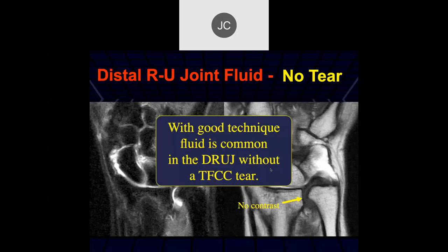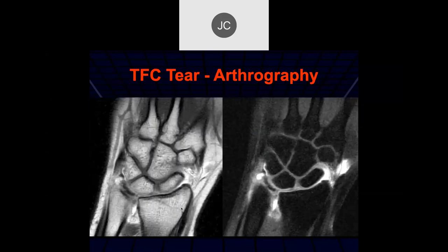This is one thing to remember: with good technique — compared to the kind of technique we did back in the 1980s — with modern MR imaging, it's not uncommon to have small effusions within the distal radial ulnar joint which are not necessarily pathologic. Here's an arthrogram where contrast is extending into the distal radial ulnar joint space, consistent with a communicating tear.